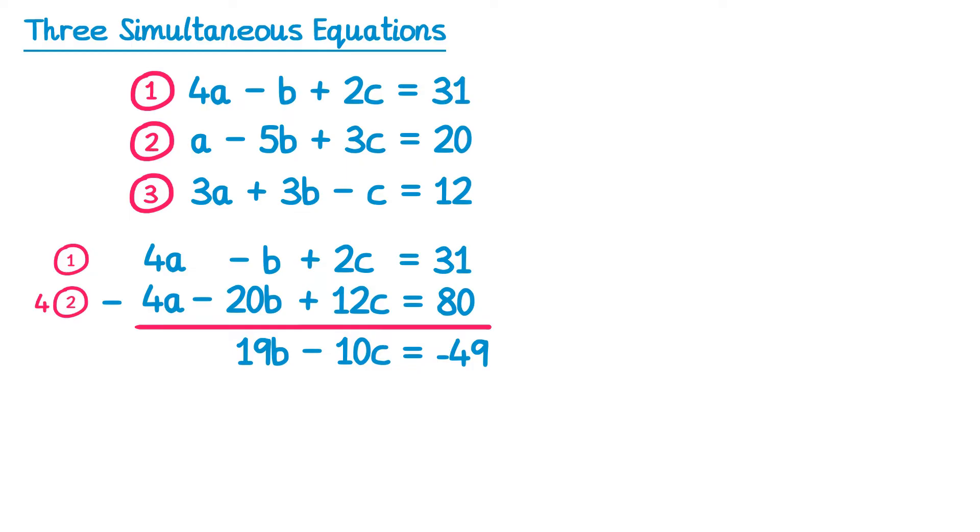So I've managed to eliminate a from the pair of equations 1 and 2. You want to repeat this process but with a different pair of equations. So I could choose 2 and 3, or I could choose 1 and 3, it won't actually matter. So I'm going to choose equations 1 and 3, but I must eliminate a. This time I've got 4a and 3a, so I'm going to multiply both equations so that I get the coefficient 12. So if I take 3 lots of the first equation, I get 12a take away 3b plus 6c equals 93, and if I take 4 lots of the third equation, I get 12a plus 12b take 4c equals 48.